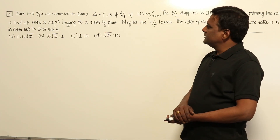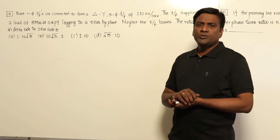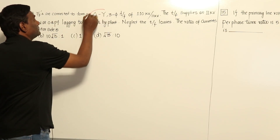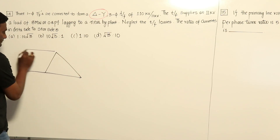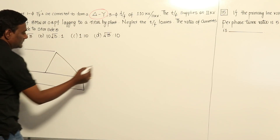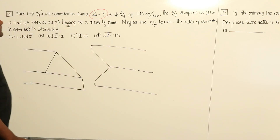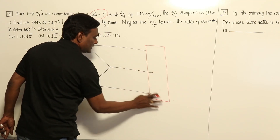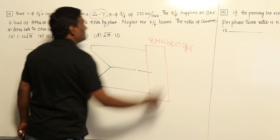This question involves a three-phase transformer, but as mentioned before, single-phase transformer ideal transformer analysis will be able to solve it. In this question, they have given a DY transformer — delta on the primary side and star on the secondary. It is a 110 kV by 11 kV transformer that supplies 11 kV at a load of 8 megawatts at 0.8 power factor lagging.